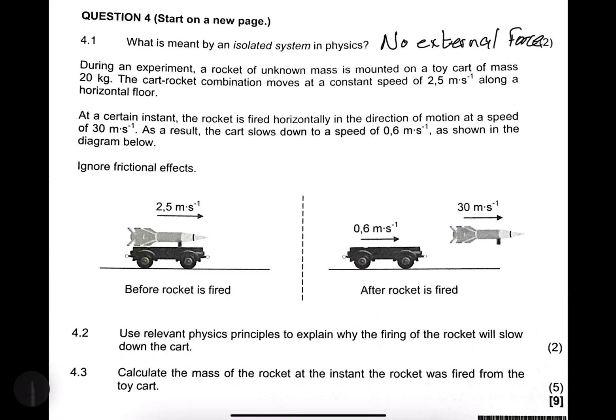So the next question, during an experiment, my handwriting looks terrible there. During an experiment, a rocket of unknown mass is mounted on a toy cart of mass 20 kilograms. They say the cart rocket combination moves at a constant speed of 2.5 meters per second along a horizontal floor. Now they say at a certain instant, the rocket is fired in the direction of motion at a speed of 30 meters per second. I think the picture speaks for itself. As a result, the cart slows down to a speed of 0.6 meters per second as shown in the diagram.